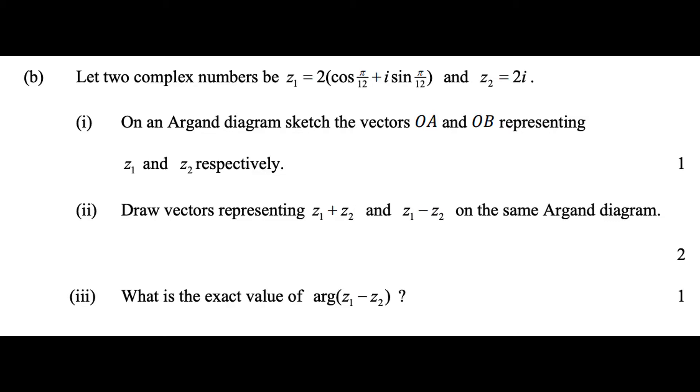Part 1 says to, on an Argand diagram, sketch the vectors OA and OB representing z1 and z2 respectively. Part 2 says to draw vectors representing z1 plus z2 and z1 minus z2 on the same Argand diagram. And then part 3 says, what is the exact value of arg z1 minus z2?